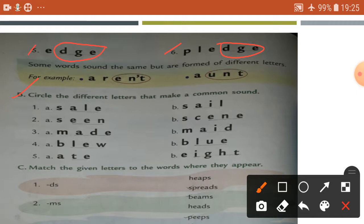In sale, first one, sale S-A-L-E. Common sound, circle A-L-E. Sail, sail S-A-I-L, okay.